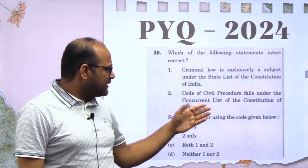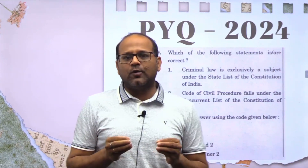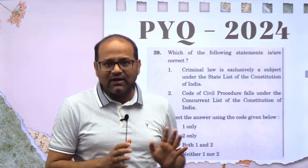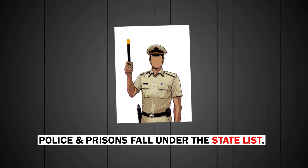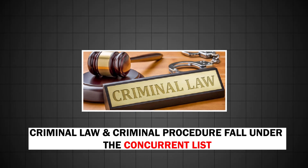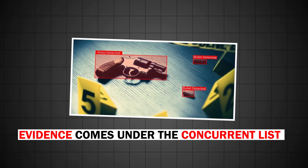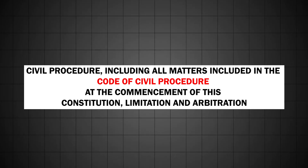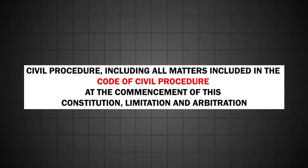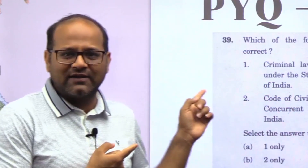Now, the Code of Civil Procedure falls under the concurrent list — yes, this is correct. Like we have seen in this skeleton, police and prisons fall under the state list, but criminal law, criminal procedure, and evidence all fall under the concurrent list. Civil procedure — including all matters in the Code of Civil Procedure at the commencement of the Constitution, limitation, and arbitration — also comes under the concurrent list. Preventive detention also comes under the concurrent list.